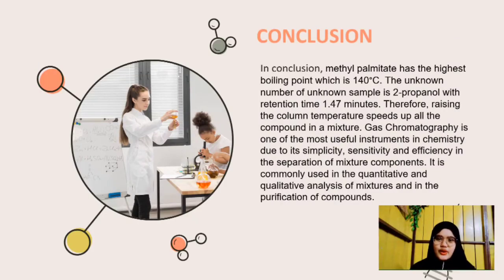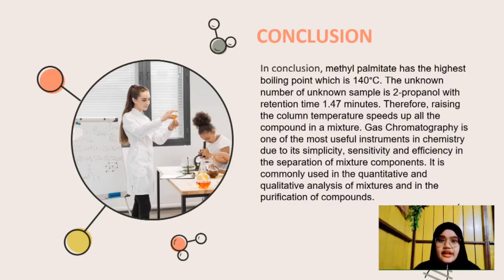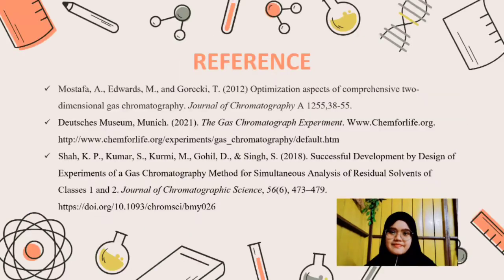My name is Nor Aina Shafiqah binti Ismail. This is the conclusion of the gas chromatography experiment. Methyl palmitate has the highest boiling point at 140°C. The unknown sample is 2-propanol with a retention time of 1.47 minutes. Raising the column temperature speeds up all compounds in a mixture. Gas chromatography is one of the most useful instruments in chemistry due to its simplicity, sensitivity, and efficiency in the separation of mixture components. It is commonly used in quantitative and qualitative analysis of mixtures and in the purification of compounds. This slide shows the references for the gas chromatography experiment.